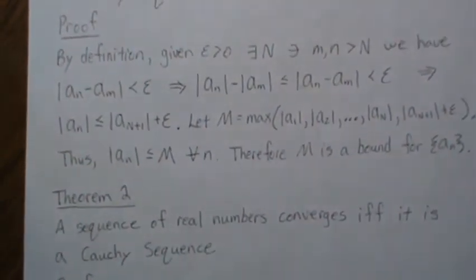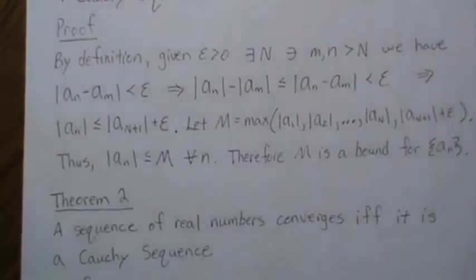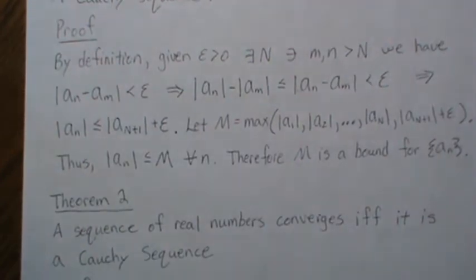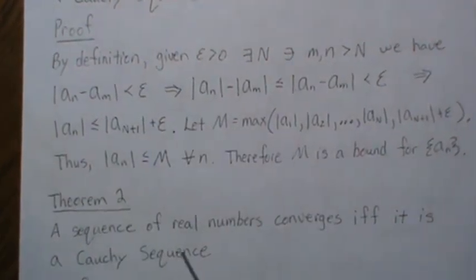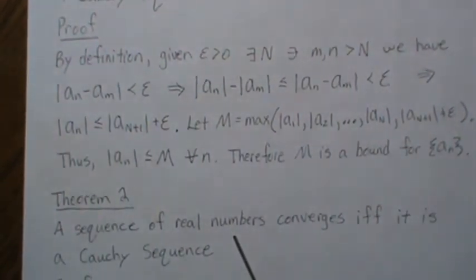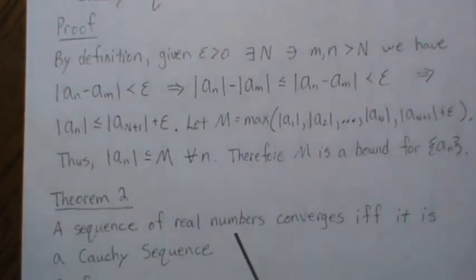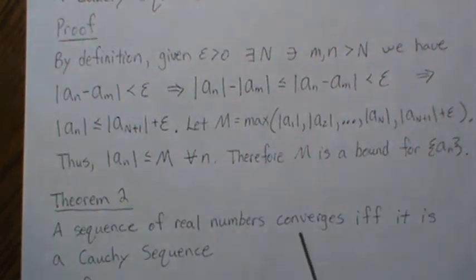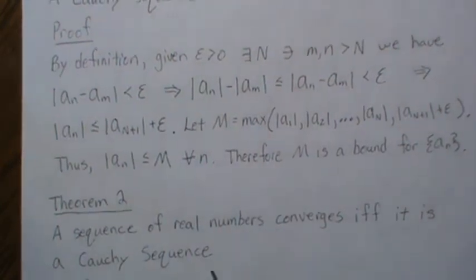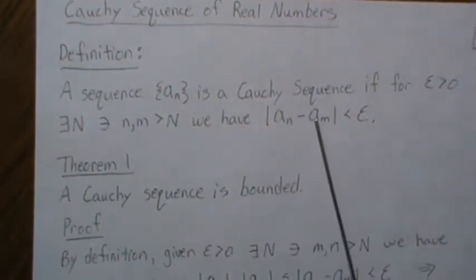Okay, so now this second theorem is what ends up being pretty powerful. A sequence of real numbers converges if and only if it's a Cauchy sequence. So the power of this theorem is that normally to prove something converges, we need to know what it converges to, and then we go through our normal way of proving that. But here, if we know a convergent sequence is also Cauchy, we don't need to actually know what the sequence converges to.